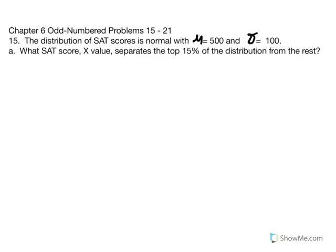Odd number problems from chapter 6, problems 15 through 21. Problem 15: A distribution of SAT scores is normal with a mean of 500 and a standard deviation of 100. What SAT score, or X value, separates the top 15% of the distribution from the rest? Let's sketch this out given the values identified.